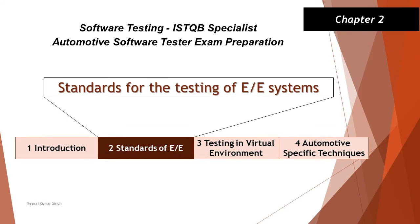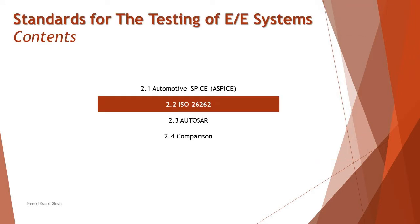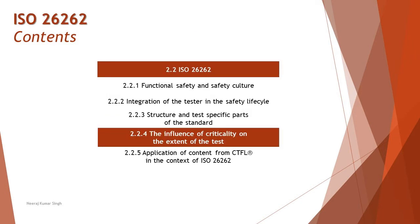Hello friends and greetings for the day. Welcome back to another tutorial on ISTQB Specialist Automotive Tester Certification. As part of this, we are still in chapter 2 on standards of E&E systems, looking into the next topic: 2.2 ISO 26262, specifically sub-component 2.2.4 — the influence of criticality on the extent of the test.